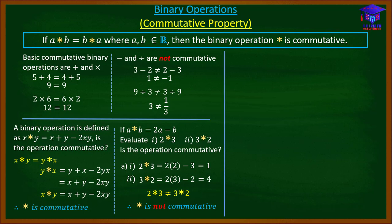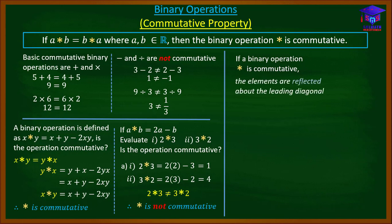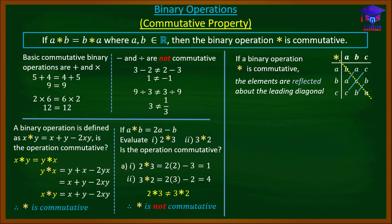There's another important idea: any time you have a commutative binary operation and you create a table, the elements are always reflected about the leading diagonal. If you cover the leading diagonal, the elements on one side are the mirror image of the elements on the other side.